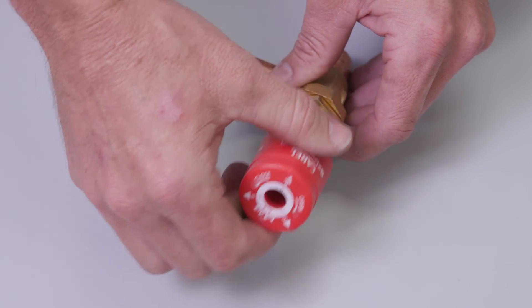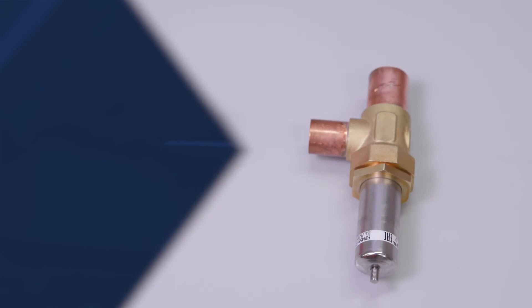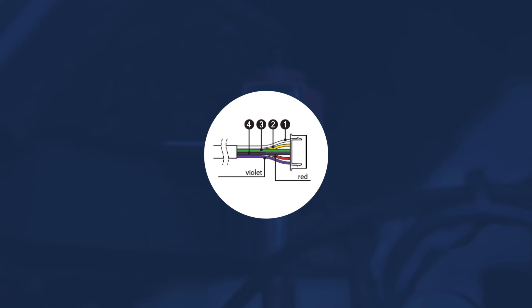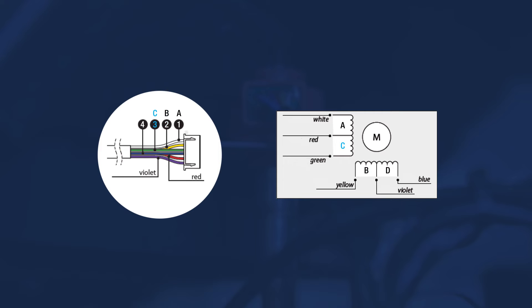The valve motor is made of four windings: A, B, C, and D. The pairing of A and C are electrically isolated to the pairing of B and D.